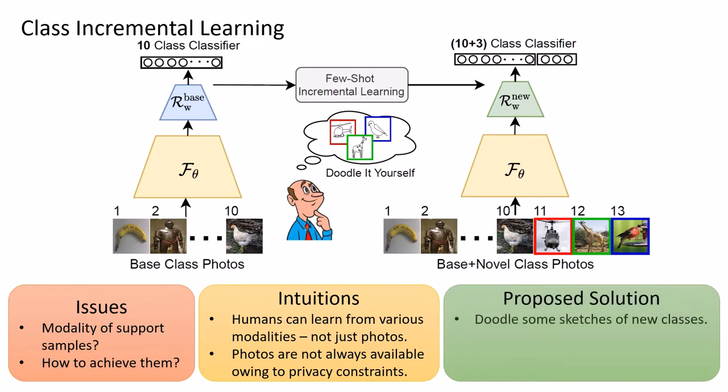We therefore propose a solution as doodle-it-yourself model, where the support samples are user-drawn sketches of images of the new classes. So learning is no longer fixed to just photos, but flexibly cross-modal with other data forms just like humans.